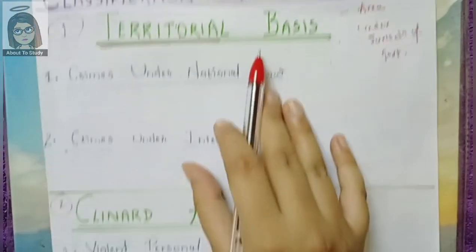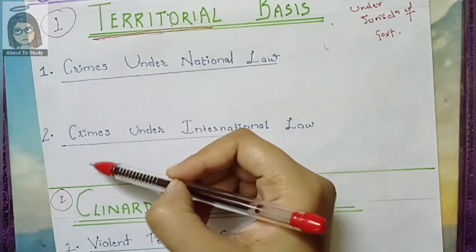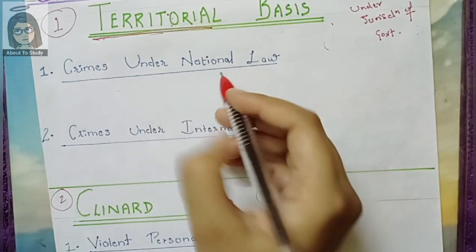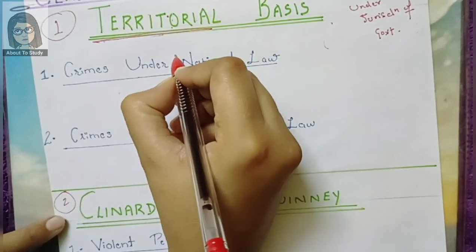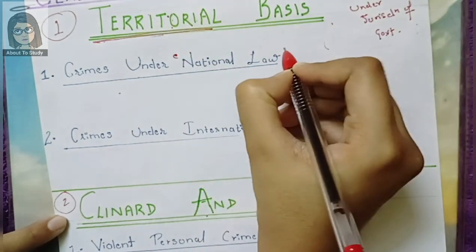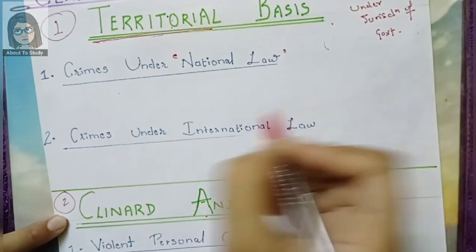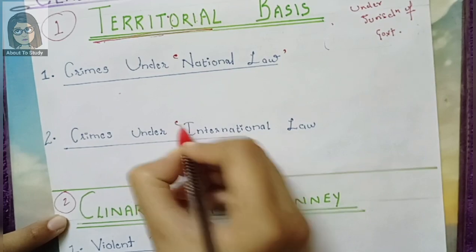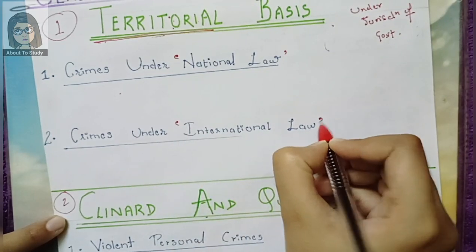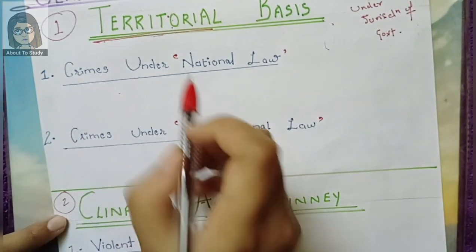We don't see a lay definition here — this is a legal definition. First, crimes under national law, then international law.